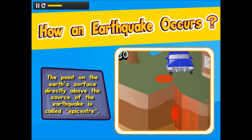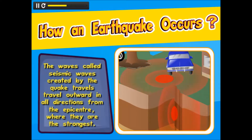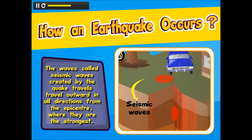The point on the earth's surface directly above the source of the earthquake is called the epicenter. The waves called seismic waves created by the quake travel outward in all directions from the epicenter, where they are the strongest.